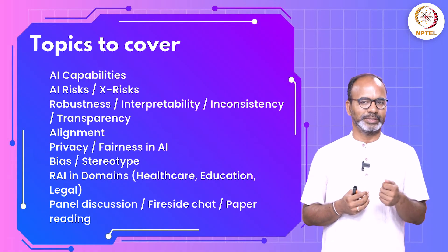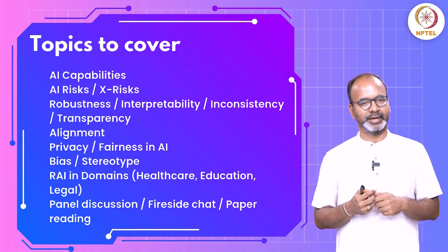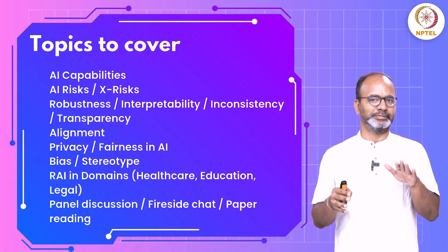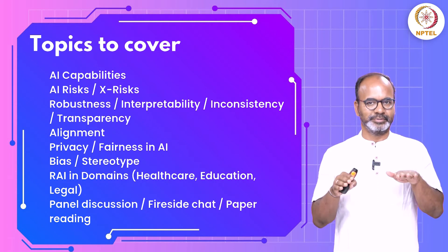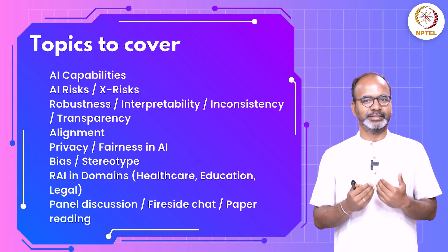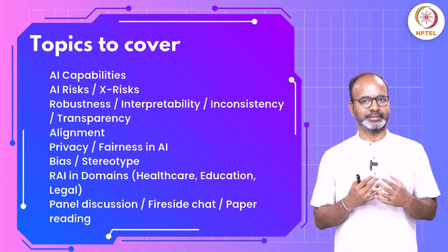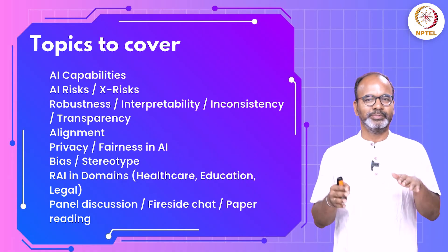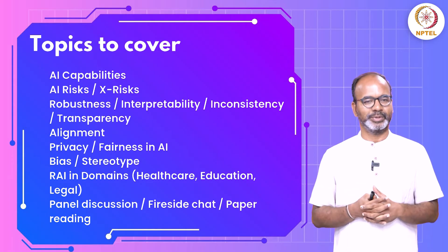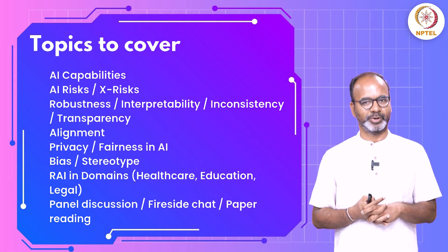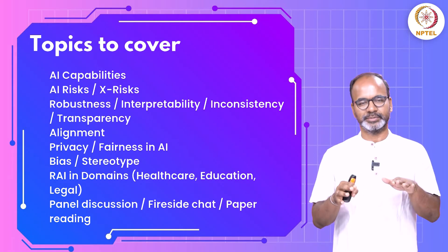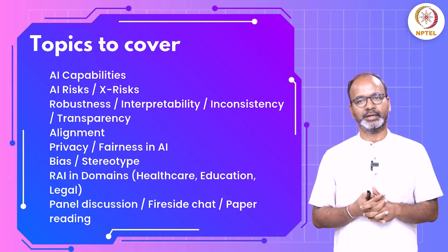Alignment is a big question we'll address in the course. If you're building technologies and algorithms, what we want the systems to do and what the systems are actually doing should be aligned — that's the alignment problem. Where alignment is not there, what are the problems to look at, why does this alignment problem arise, and how to actually build systems so that alignment is better captured?